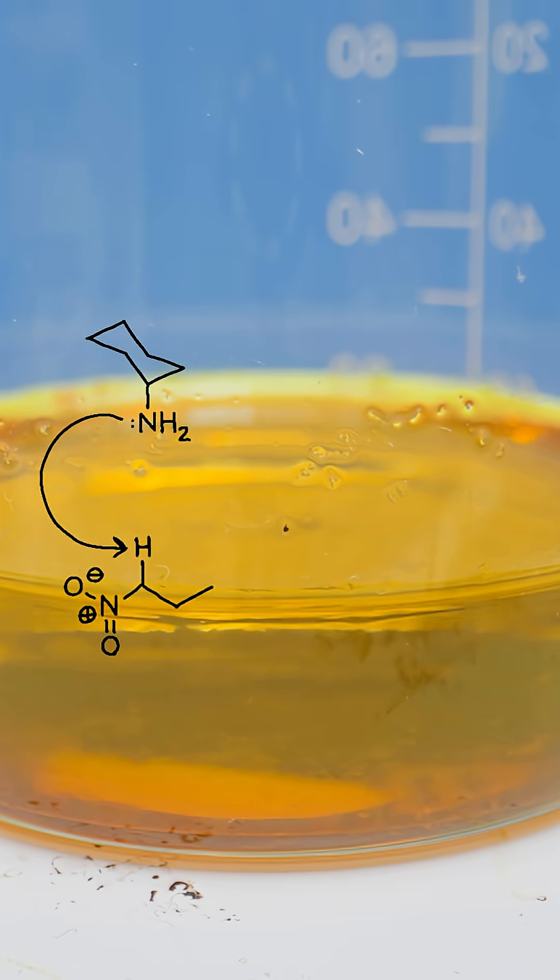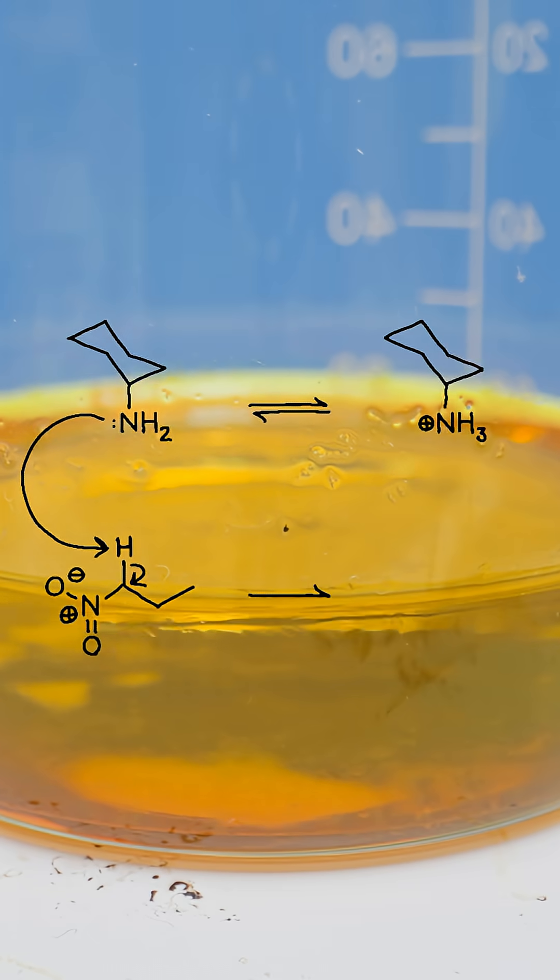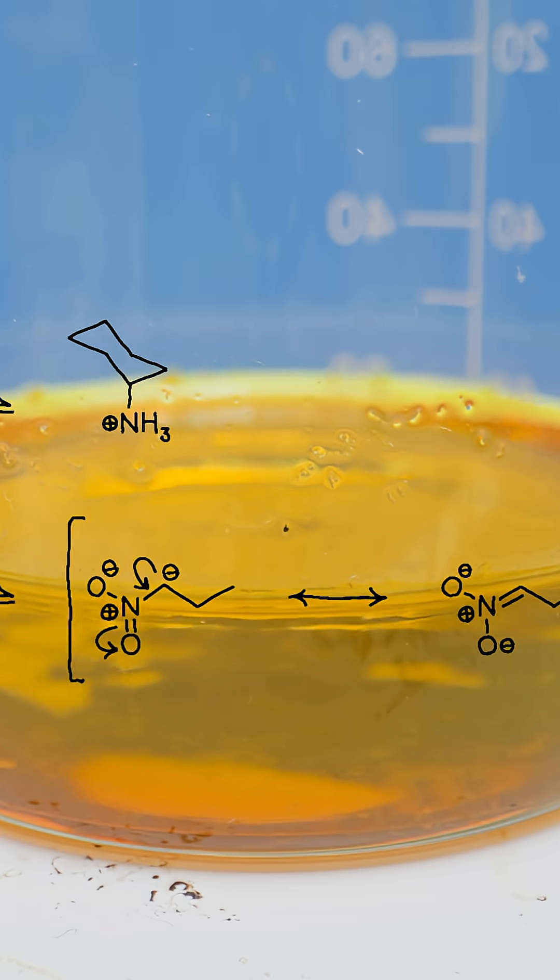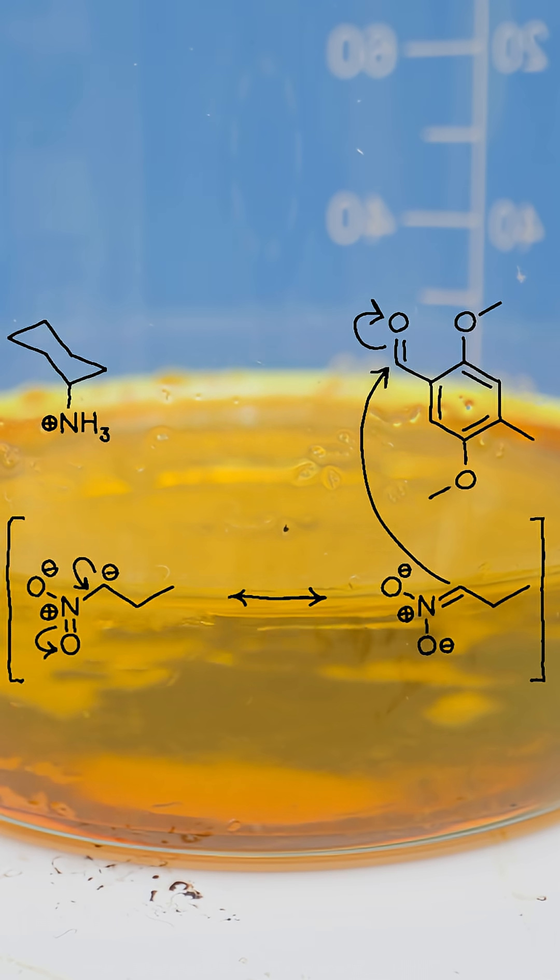Cyclohexylamine abstracts nitropropane's acidic alpha proton to generate a nitronyl tautomer that attacks the aldehyde's electrophilic carbonyl carbon.